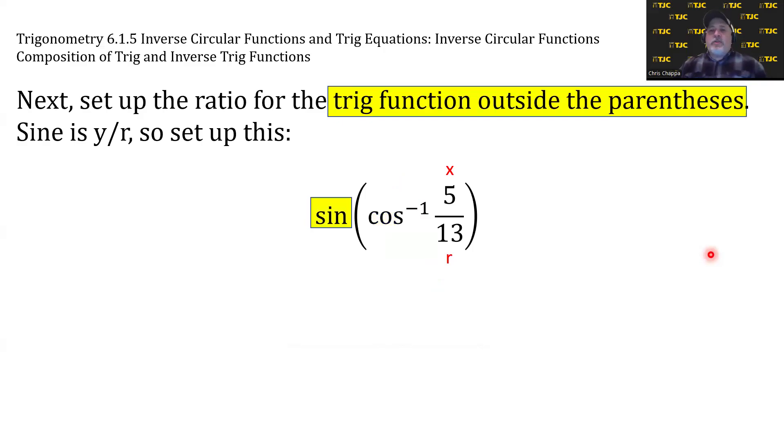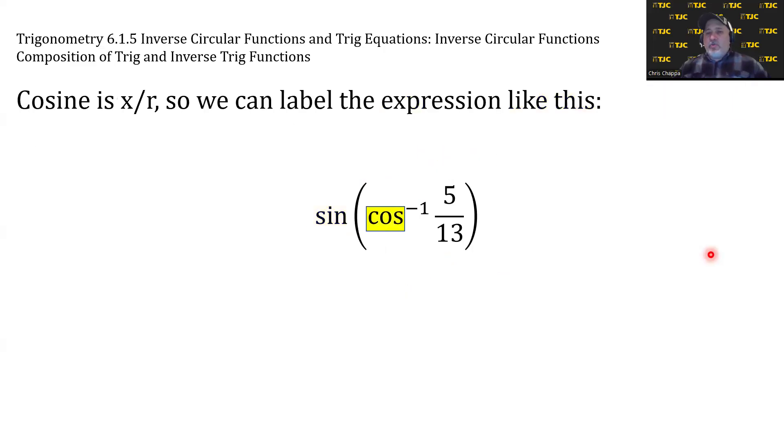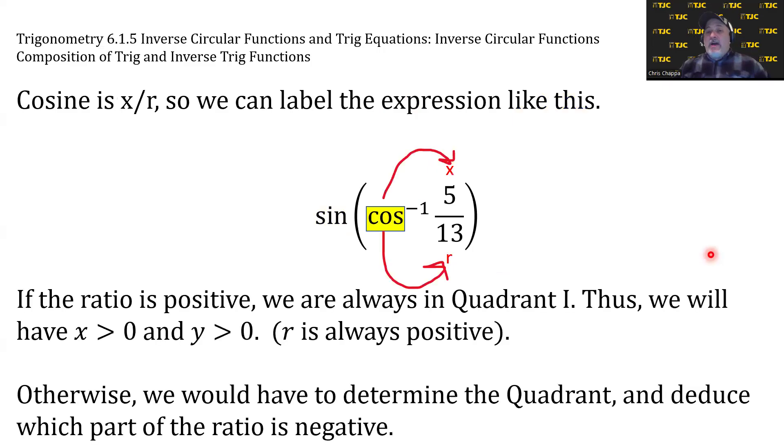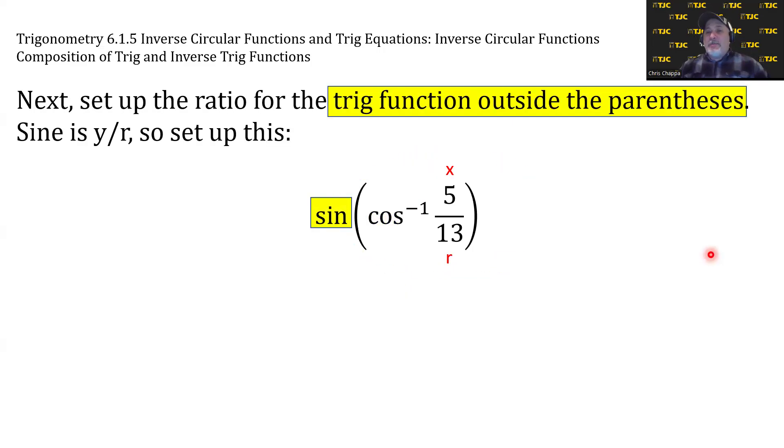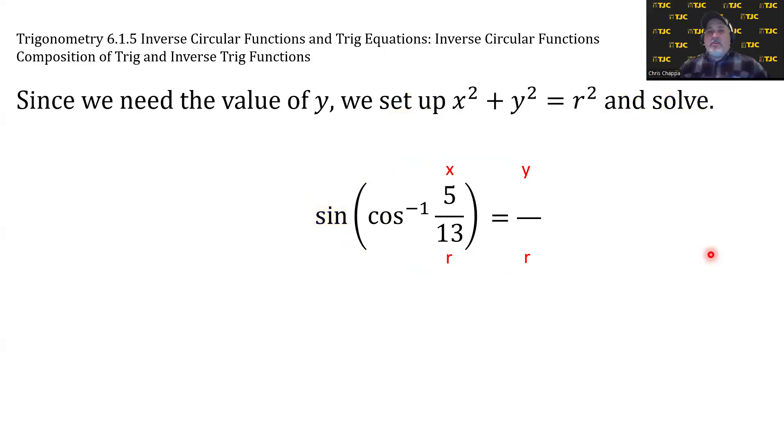Next, we're going to set up the ratio for the trig function on the outside. Sin is y over r, so we're going to set it up like this. On the other side of an equal sign, we're going to set up a fraction and make note that y goes on top, r goes on bottom. Outer trig function tells you what to put there. Inner trig function tells you how to dissect the given ratio. Outer trig function tells you how to reassemble a ratio.